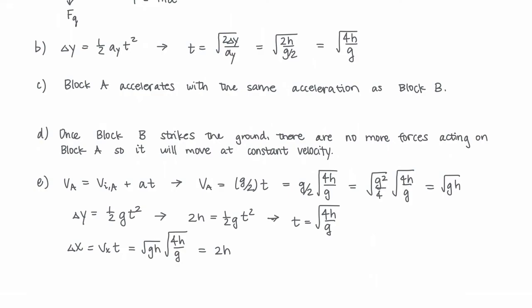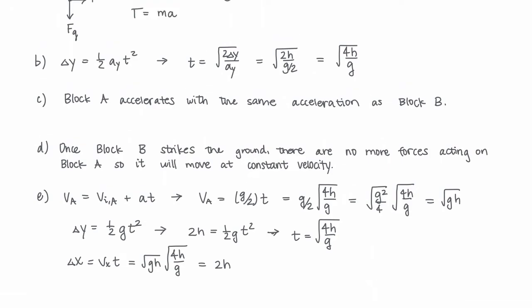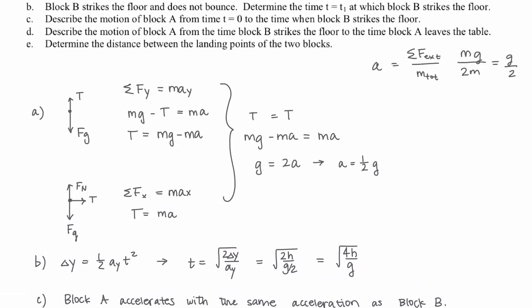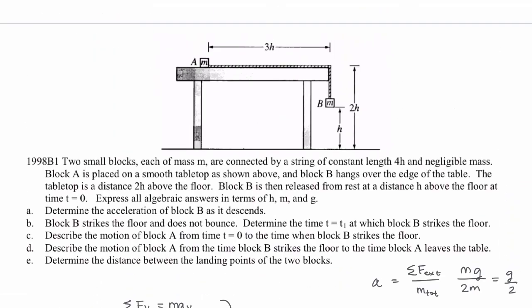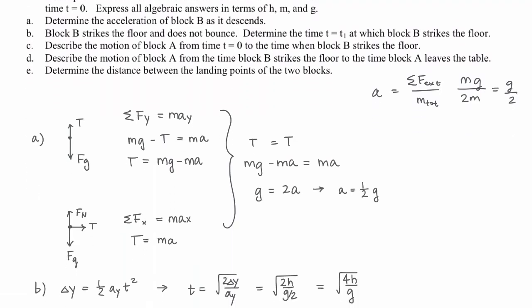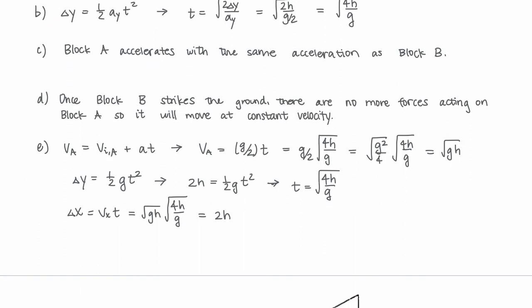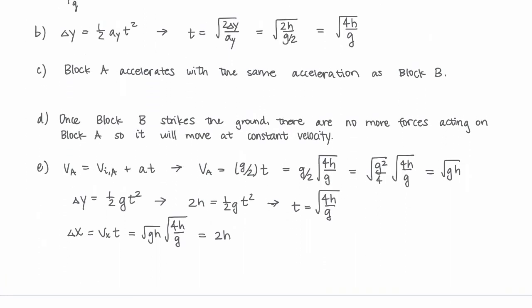Block A lands 2h away from the table. Block B strikes the ground directly below where it started since it has no velocity in the x direction. So the distance between their landing positions is 2h.